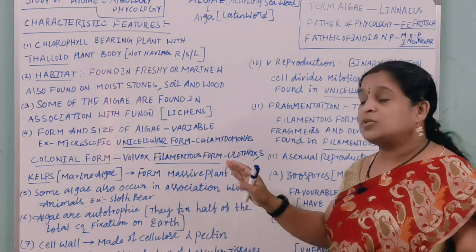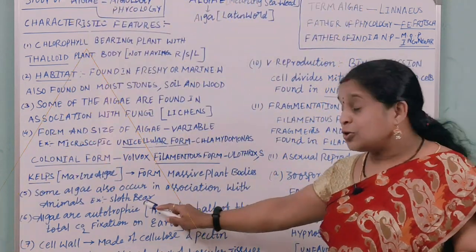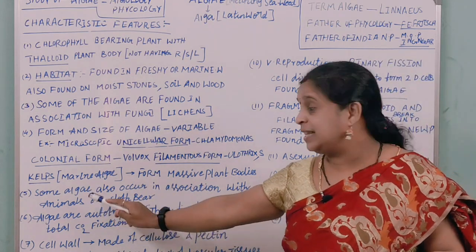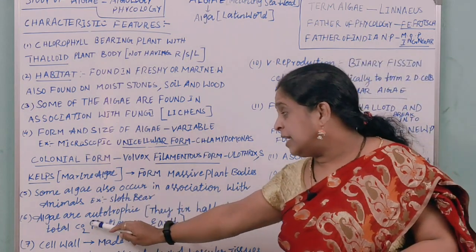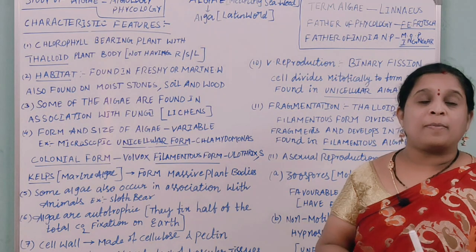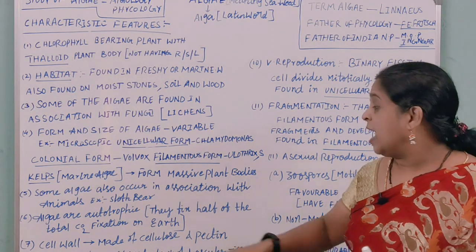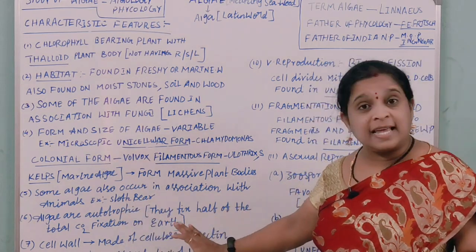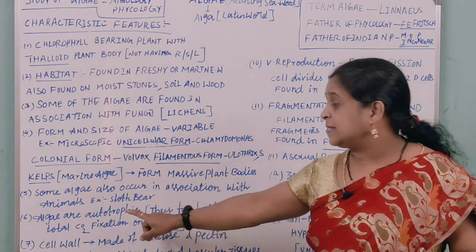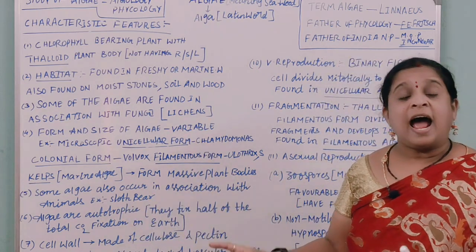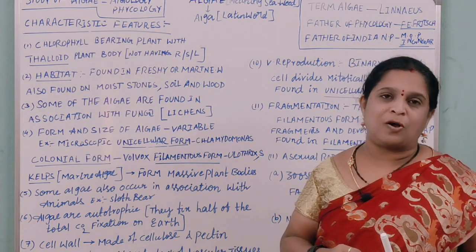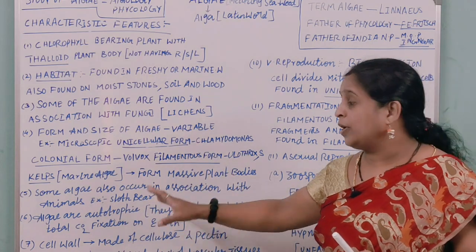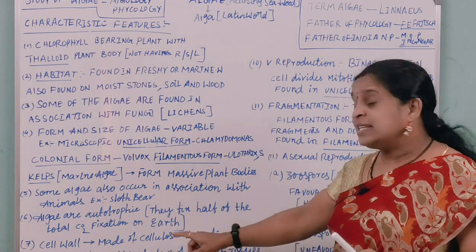Kelps are marine algae that form massive plant bodies. The fifth point is that some algae also occur in association with animals — the sloth bear is an example of an animal having an association with algae. Algae are autotrophic; they fix carbon dioxide, and around 50 percent of the total carbon dioxide fixation on Earth is carried out by algae.